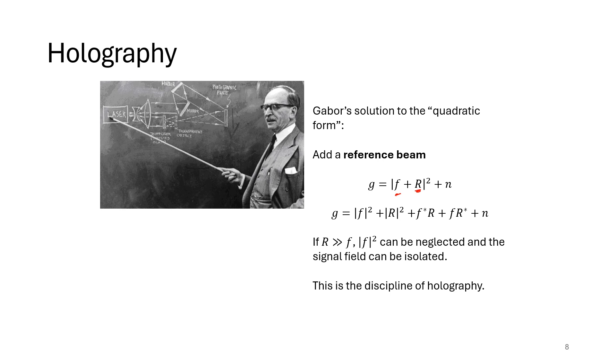We take the magnitude squared of that and now we have a bunch of terms here. One is f squared, r squared, both of which would be difficult for us to find the field from. We have this term f times r conjugate. And if we could isolate that term because we know r, we could find out what the unknown field is. So holography basically consists of finding ways to get rid of those other terms.